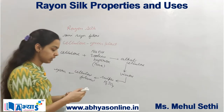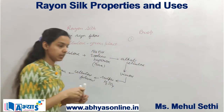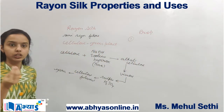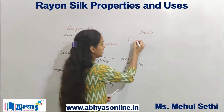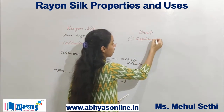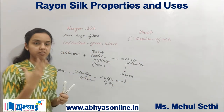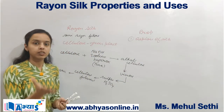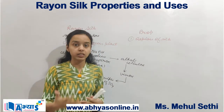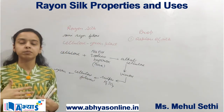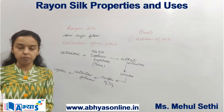The first property of rayon silk is that it has the texture of silk, meaning it can be used as a replacement for silk. As silk is a costly fiber, rayon is less expensive in comparison. So we can use it in all types of clothing — we can produce sarees and other types of clothing from rayon silk as well, and it will resemble silk to some extent.